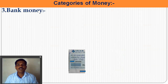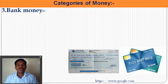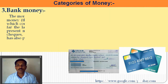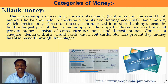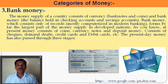The third type is bank money. Looking at the picture, we see checks and credit cards. Bank money means the creations of banks — checks, credit cards, and debit cards. The money supply of a country consists of currency, bank notes, coins, and bank money — balances held in checking and savings accounts. Bank money consists only of records, mostly computer records in modern banking, representing transactions from one account to another.